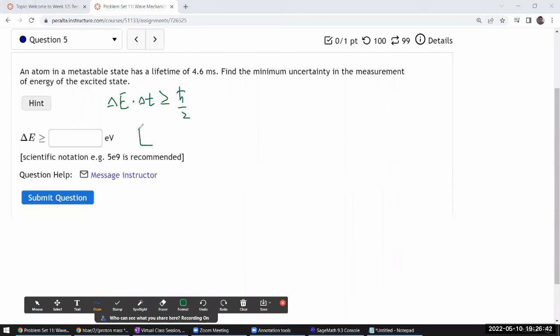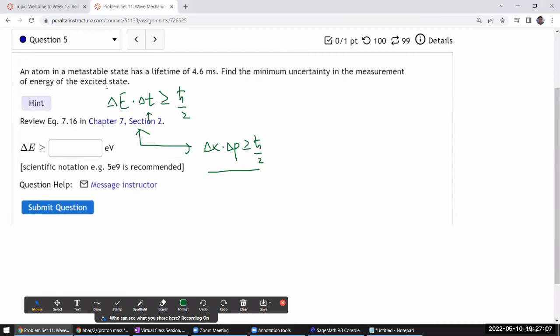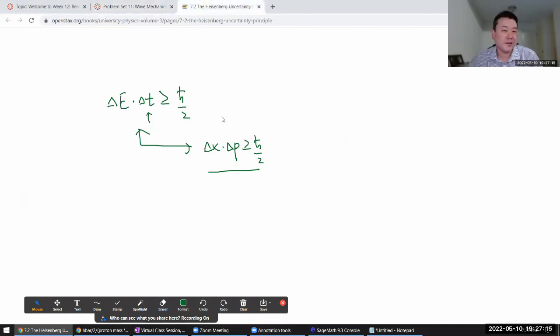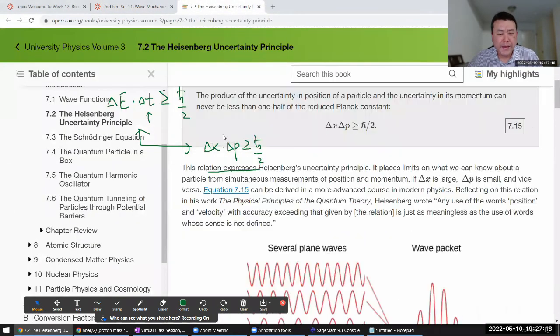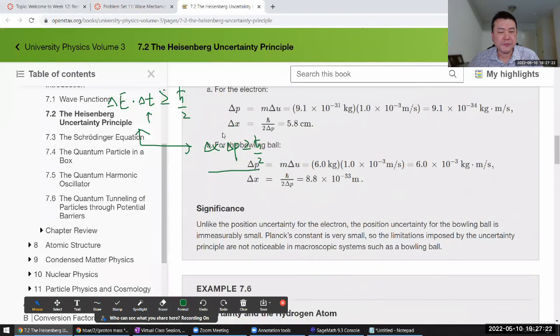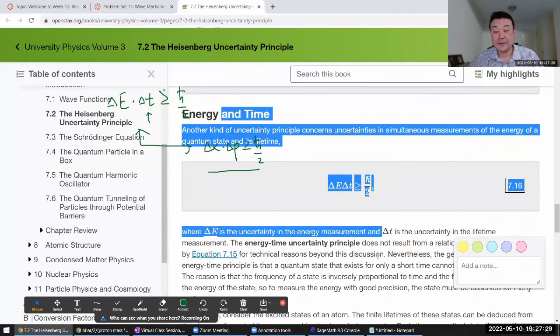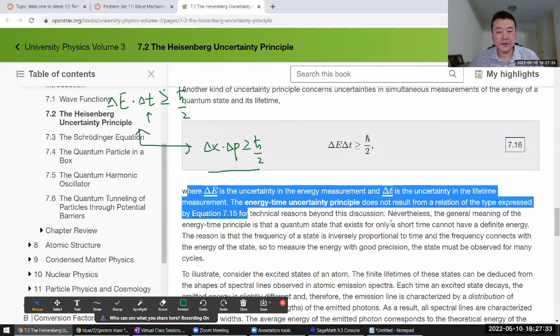While in form it looks rather similar to this delta x delta p relationship, there's quite a bit of difference in how you interpret this. Like this delta t, it's not uncertainty in time, it's more like a duration of time. And I guess that nuance is better addressed in the upper division quantum mechanics class. For the purpose of this class, just knowing this form is good enough. So this is what it's saying.